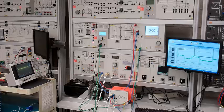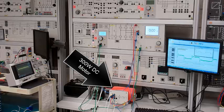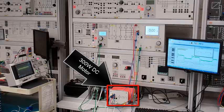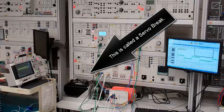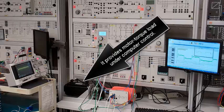300 Watt DC Motor with PI Current Control and PI Speed Control. There's the motor. This is called a servo brake. It provides motor torque load under computer control.